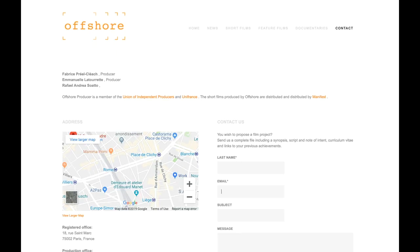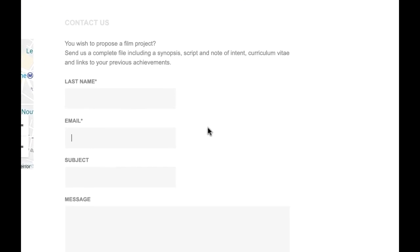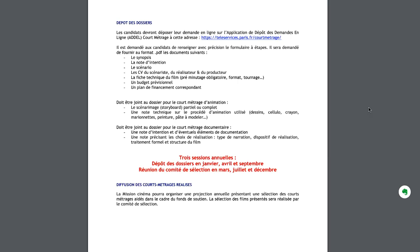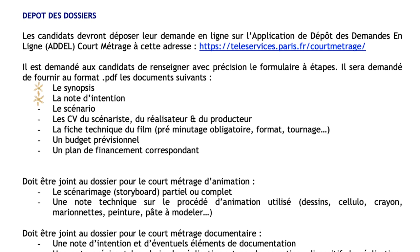Here's a great example. This is one particular production company, and it shows specifically what they want when they receive a pitch from you. They're going to want to see a synopsis, a note of intention from the director, the entire script, a resume from the director, and a demo reel. Now here's another example — a grant application, and they want a little bit more than the production company does. They want a synopsis, note of intention, the script, resumes from the writer, the director, and the producer, a technical sheet, provisional budget, and a finance plan.